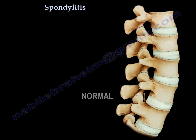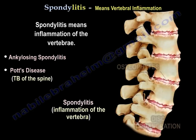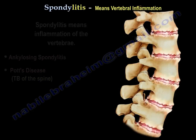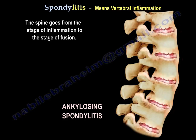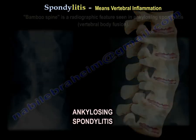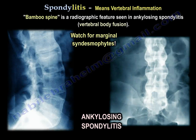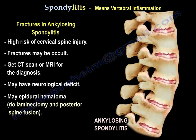How about spondylitis? It is inflammation of the vertebrae, like ankylosing spondylitis or TB. In ankylosing spondylitis, it goes from a stage of inflammation to a stage of fusion — you get bamboo spine. Watch for the marginal syndesmophytes. There is a high risk of C-spine injury, and fracture may be occult; you may need a CT scan or MRI to diagnose it.